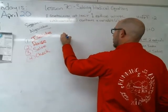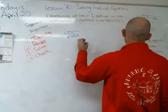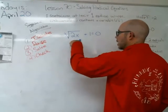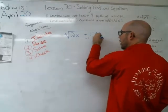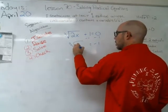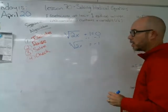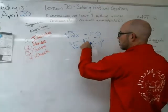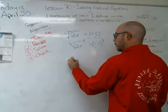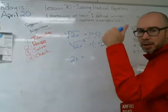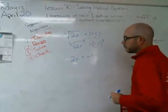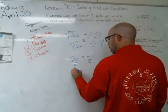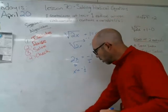Next one ups the ante — it has a cube root. Isolate: we need the cubed root of 2x on one side with a negative one on the other: negative one equals cubed root of 2x. Step two: the index is 3, so we cube both sides. The cube and cube root cancel, giving 2x on the left. Negative one cubed is negative one times negative one times negative one, which equals negative one. So 2x equals negative one, and dividing by 2: x equals negative one-half.